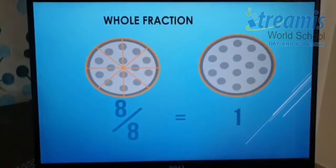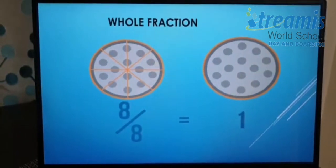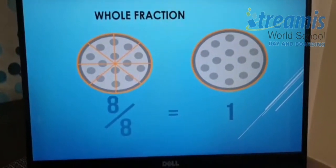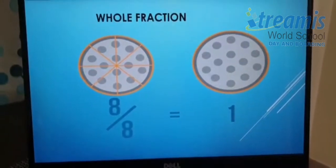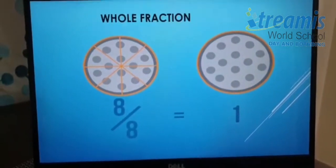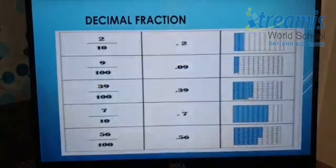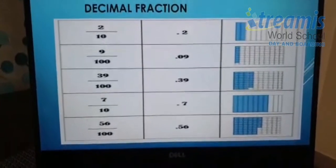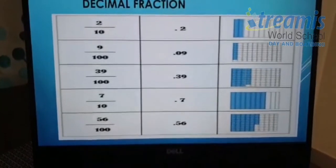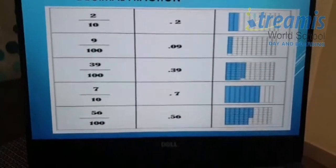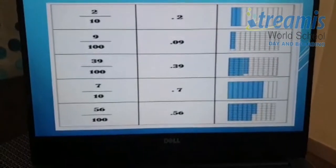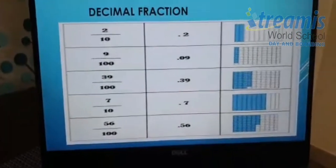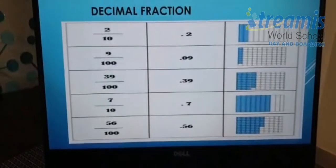The next one is whole fraction. A whole fraction is a fraction where the numerator and denominator are the same and it is equal to one. As you can see in the example, we divided one whole pizza into eight slices, and out of eight total, that's the whole fraction. And the last type of fraction is decimal fractions. A decimal fraction is a fraction where the denominator is a power of ten, or you can say a multiple of ten — that is ten, hundred, thousand, ten thousand, etc. So two by ten, nine by hundred, and thirty-nine by hundred are all examples of decimal fractions.